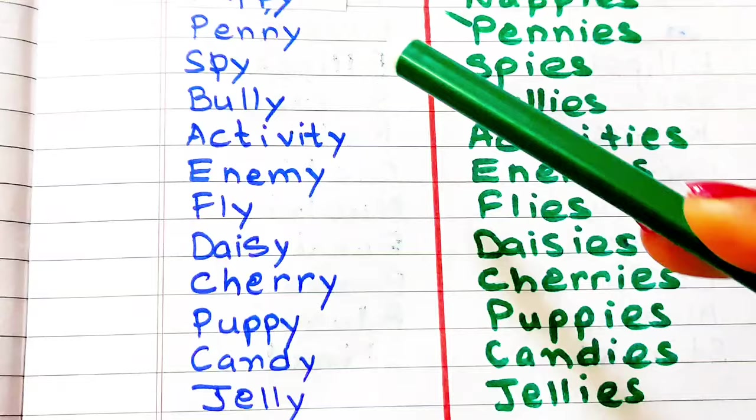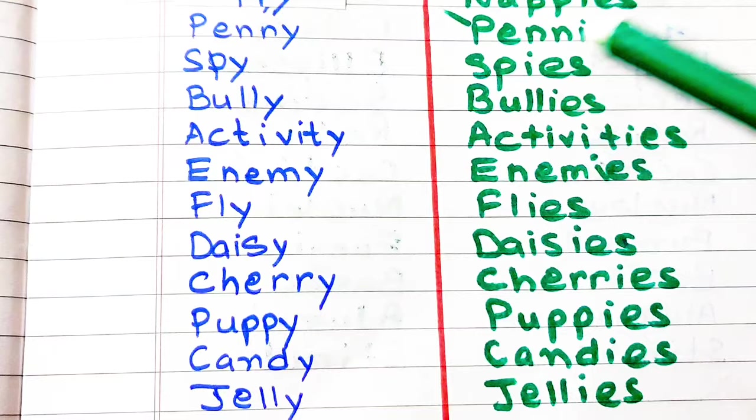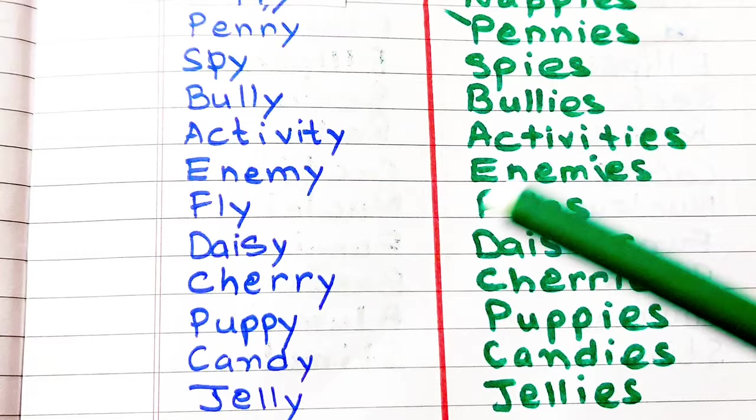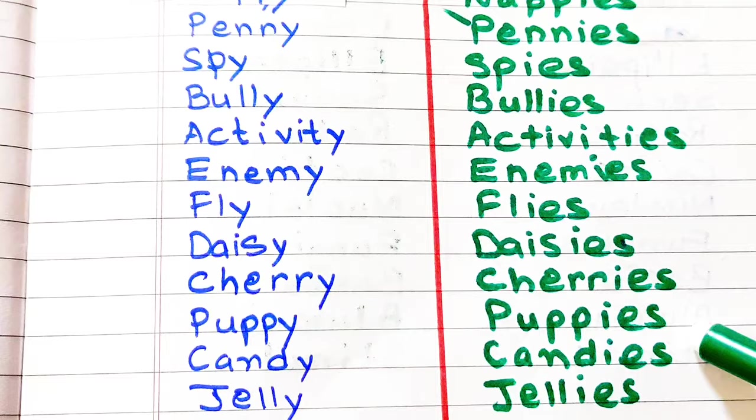Penny, pennies. Spy, spies. Bully, bullies. Activity, activities. Enemy, enemies. Fly, flies. Daisy, daisies. Cherry, cherries. Puppy, puppies. Candy, candies. Jelly, jellies.